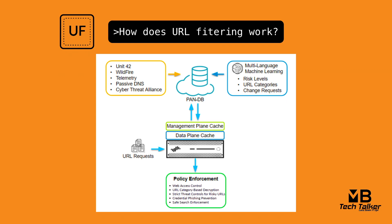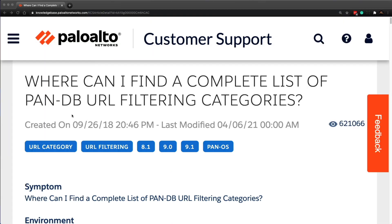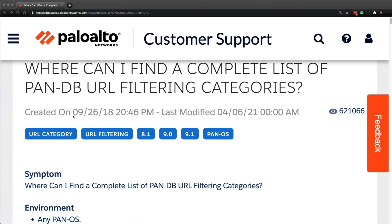When a user accesses a URL they've not visited before, the firewall checks PanDB for the site's category and saves it in the firewall's cache. As the cache saves new entries, any old URLs that have not been accessed recently are removed, providing an accurate reflection of traffic within the network. When the firewall checks PanDB for a URL, it also looks for critical updates — such as URLs that previously qualified as benign but are now malicious. Every 30 minutes the firewall checks PanDB for such updates.